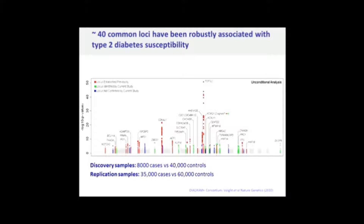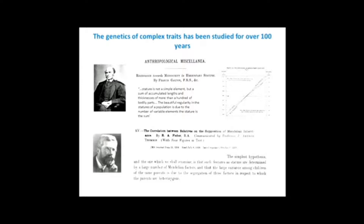To be able to do this, we needed 8,000 cases, 40,000 controls, and a huge replication sample. One of the other traits we're particularly interested in is the variation in human height. This is one of the first well-described complex traits, and it was over 100 years ago that Galton and Fisher predicted that human height would be a component of multiple genes of small effect. This has actually turned out to be true, but we've only started to find those genes in the last five years or so.